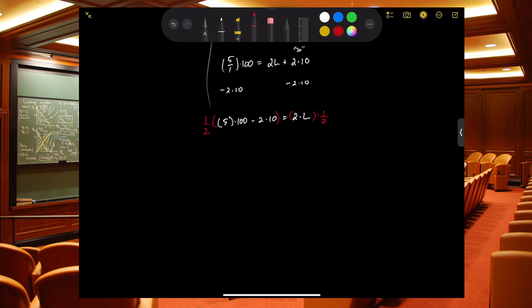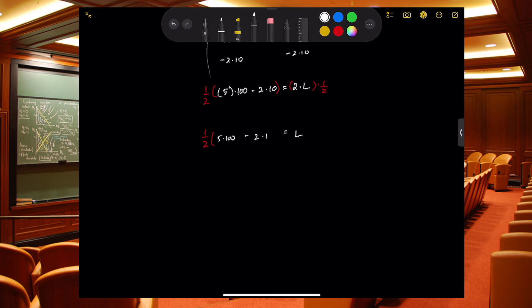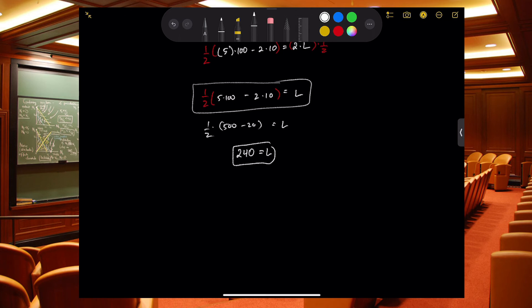Again, both sides the whole thing, so that I'm left with L equals 1/2 times all of this, so 1/2 times 5 times 100 minus 2 times 10. Now what we can do at this point is calculate all this. We could have been simplifying as we go, but I told you we weren't doing that. So this is 500 minus 20 being multiplied by a half, so that's 480 on the inside times a half is 240 for L.